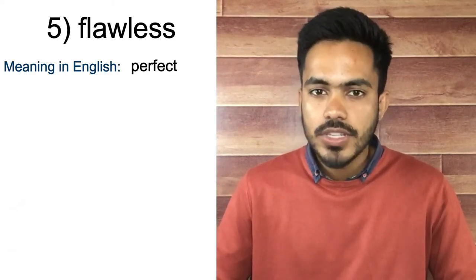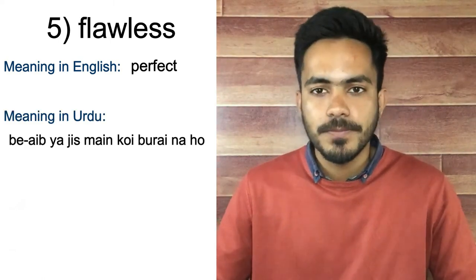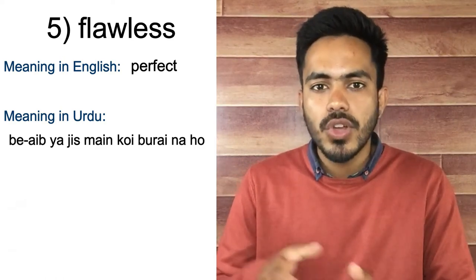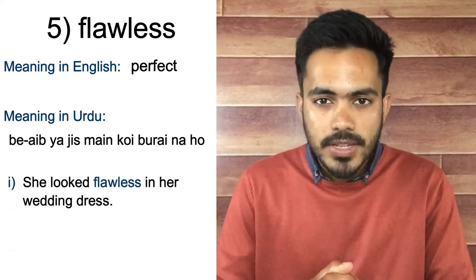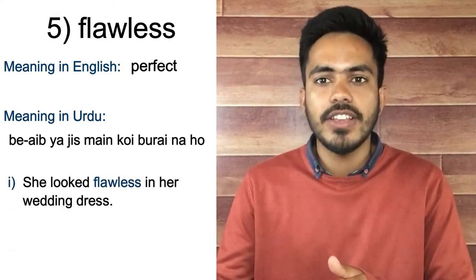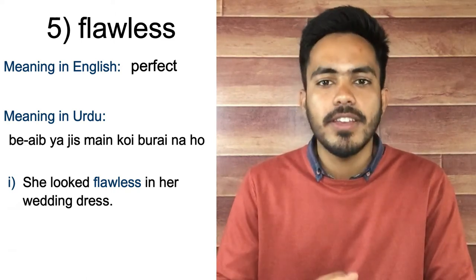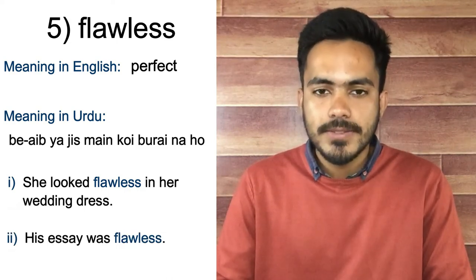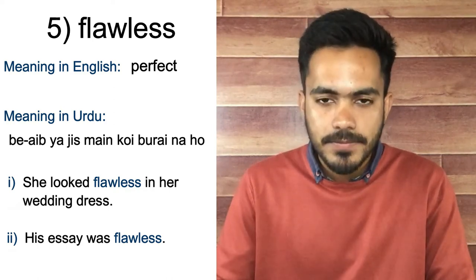On number five we have 'flawless'. Its meaning in English is perfect. In Urdu it means بے عیب — something with no defect or fault, since 'flaw' means defect or fault. For example: 'She looked flawless in her wedding dress' — she looked perfect in her wedding dress. Second example: 'His essay was flawless' — there was no mistake in his essay, it was perfect.